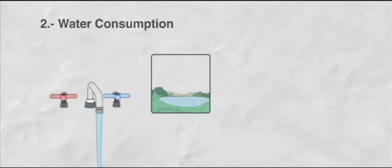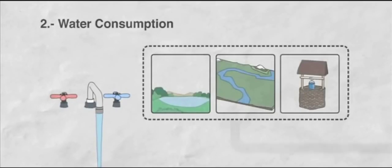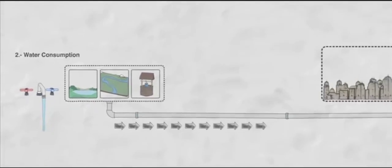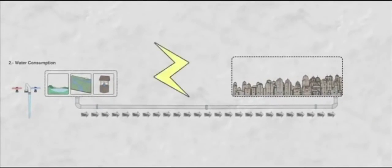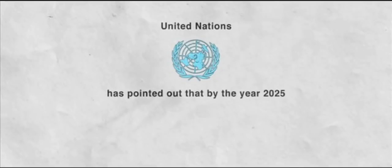Two, water consumption. The water you normally get from the grid is pumped from lakes, rivers and underground water, often travelling long distances for human usage, consuming a lot of energy. United Nations has pointed out that by the year 2025, 50% of the global population will have water scarcity problems.